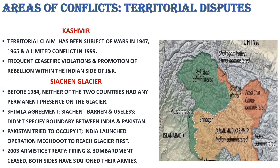The other disputed area is the Siachen Glacier, located in northern Ladakh. Before 1984, neither country had any permanent presence on the glacier. Under the Shimla Agreement, Siachen was called a barren and useless — that is, lifeless — area, and the agreement did not specify the boundary between India and Pakistan. When India got intelligence that Pakistan was going to occupy Siachen Glacier, it launched Operation Meghdoot to reach the glacier first. The operation was successful and the Indian Army obtained the area at a higher altitude, giving India a strategic advantage.